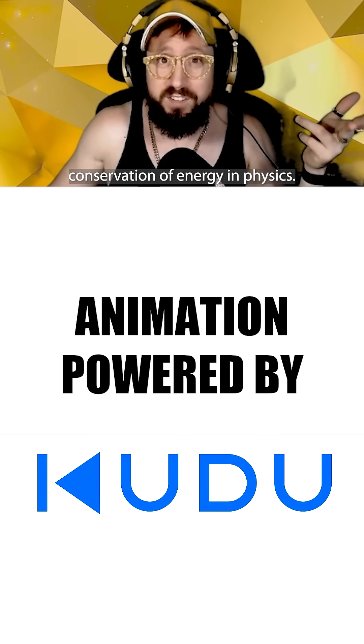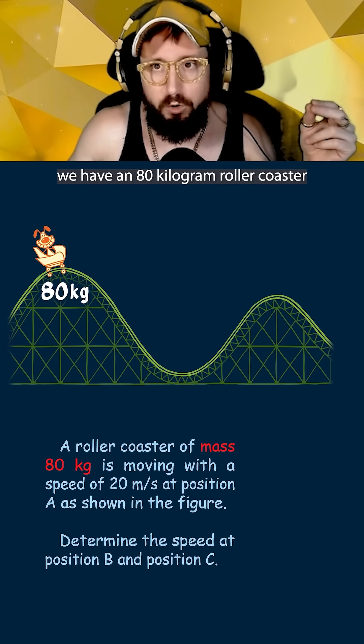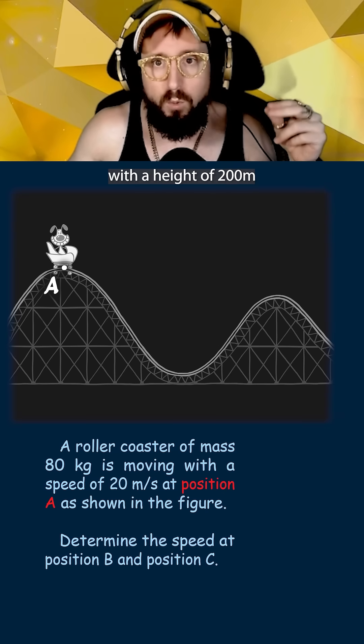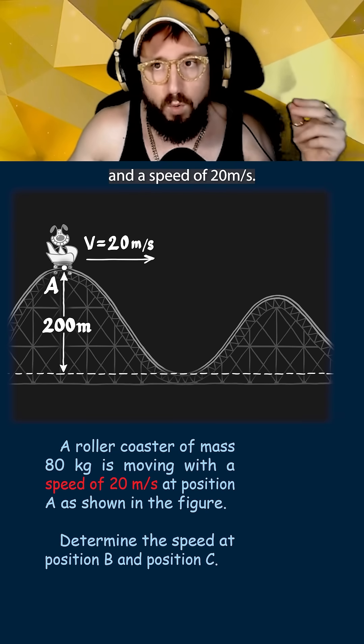Here's how to use conservation of energy in physics. In this example we have an 80 kilogram roller coaster that starts at point A with a height of 200 meters and a speed of 20 meters per second.